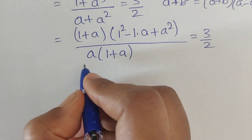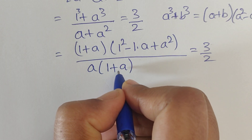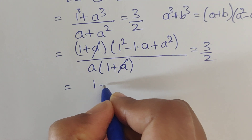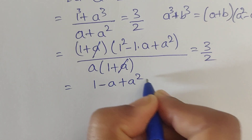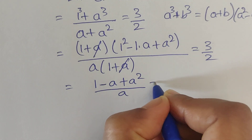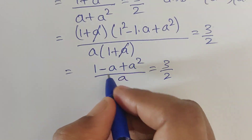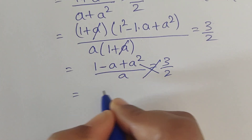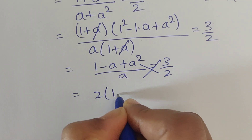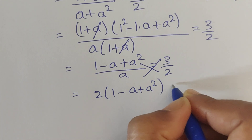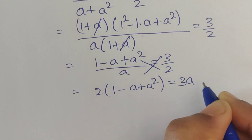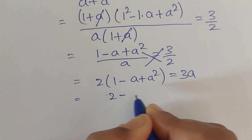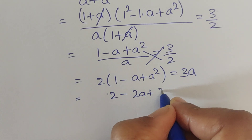Now (1 plus a) in the numerator and (1 plus a) in the denominator get cancelled. Then we get (1 minus a plus a²) divided by a equals 3/2. Now cross multiply: 2 times (1 minus a plus a²) equals 3a. So 2 minus 2a plus 2a² equals 3a.